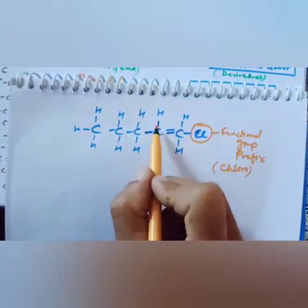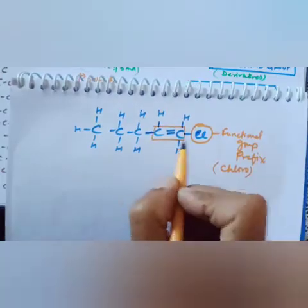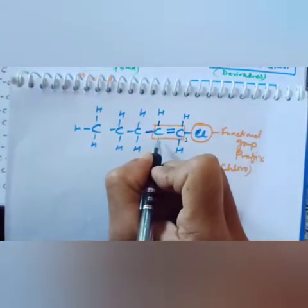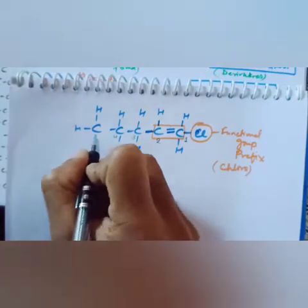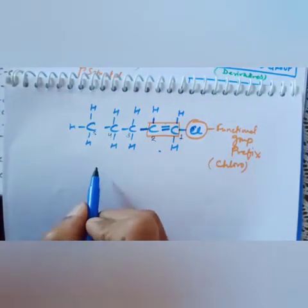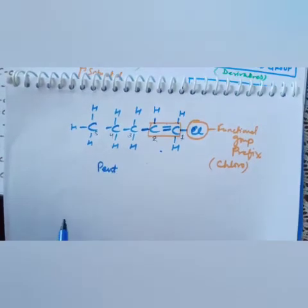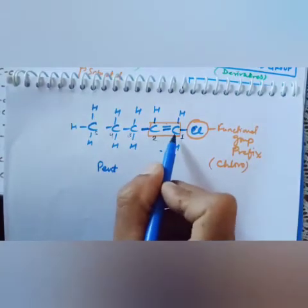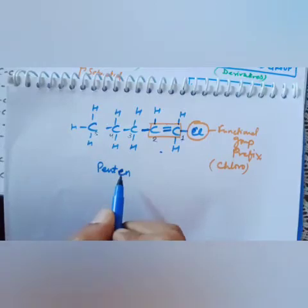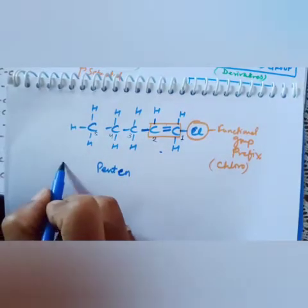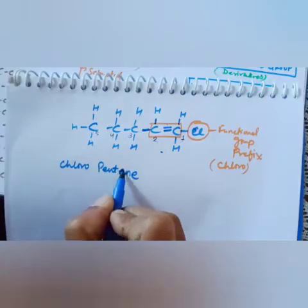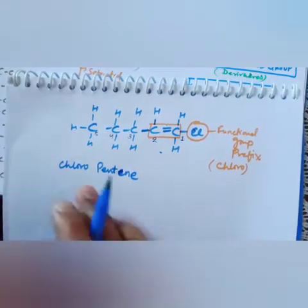We found a double bond between two carbons. The numbering starts from the side where the functional group is nearest. Counting one, two, three, four, five — there are five carbons, so the word root is pent. There is a double bond, so the suffix is 'ene' — giving pentene. The functional group is chloro, which is a prefix, so the full name is chloropentene.